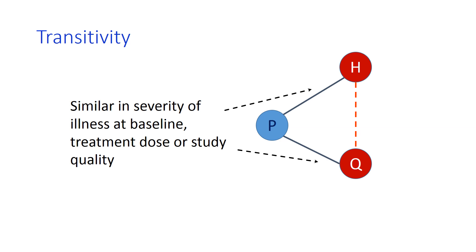The plausibility of the transitivity assumption requires judgments to be drawn about the comparability of the distributions of the effect modifiers across studies. However, effect modifiers are often under-reported in studies, or there are too few studies available per comparison to enable reasonable judgment. So in practice, transitivity is often an untestable assumption.